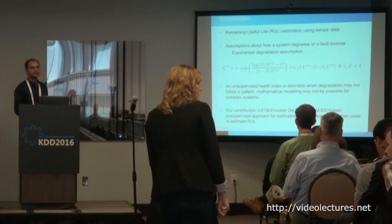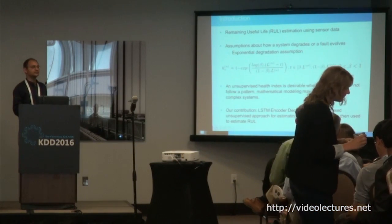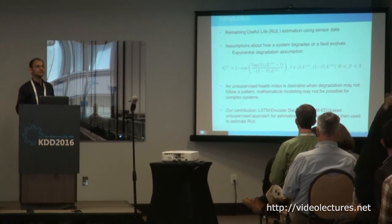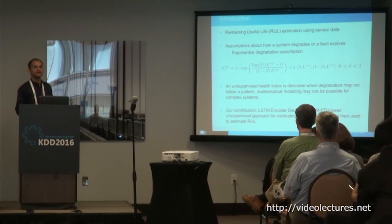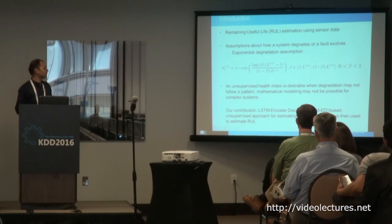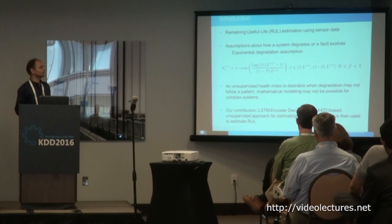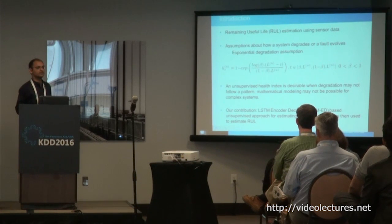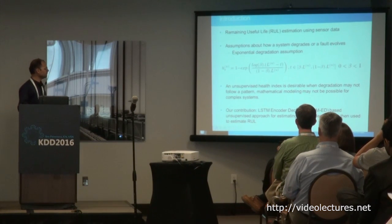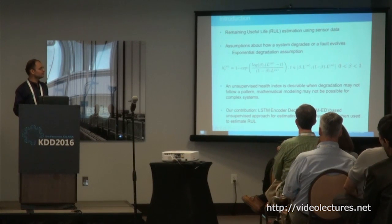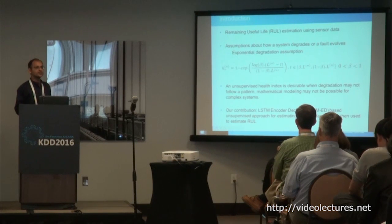In this work, we focus on remaining useful life estimation using multi-sensor time series data. Many approaches for remaining useful life estimation make some assumption about how a system degrades or a fault evolves. One of the most commonly used assumptions is the exponential degradation assumption, where the health index u at time t is one at the beginning or when the instance is in a nominal state, and goes to zero as the system degrades. An unsupervised health index is desirable when degradation may not follow a pattern or mathematical modeling may not be possible for complex systems.